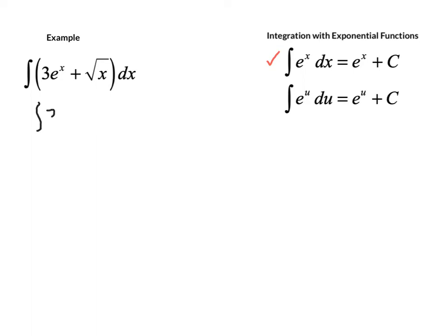Here we can use sum and difference rule. We call this 3 e to the x dx, and then we just don't do integrals in radical form. So that's x to the 1 half dx.